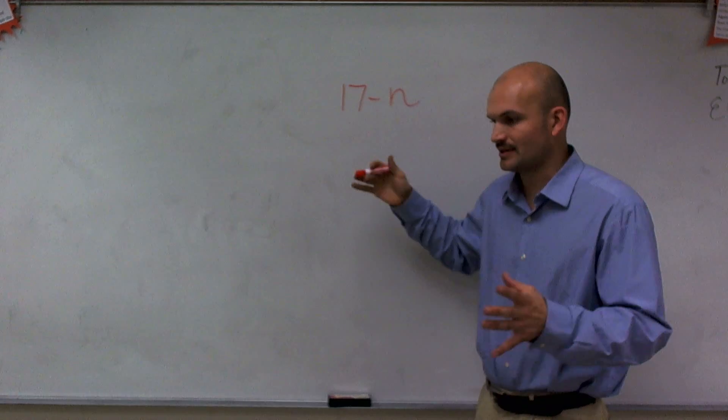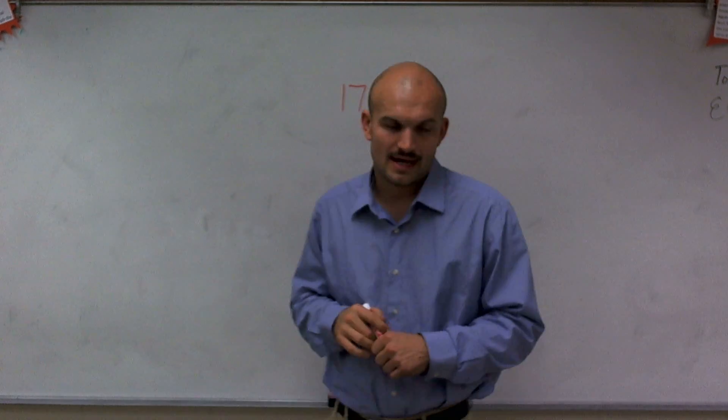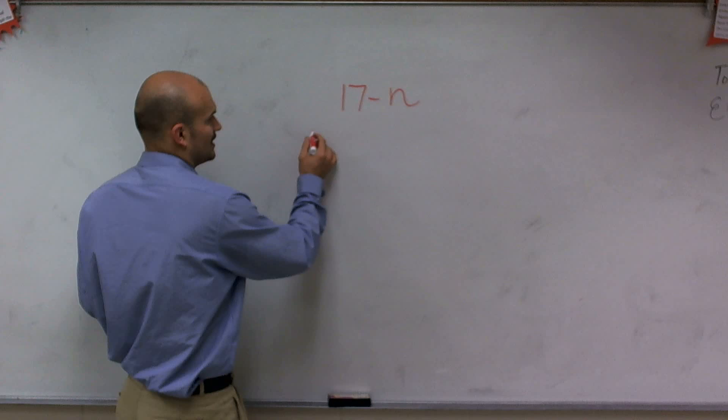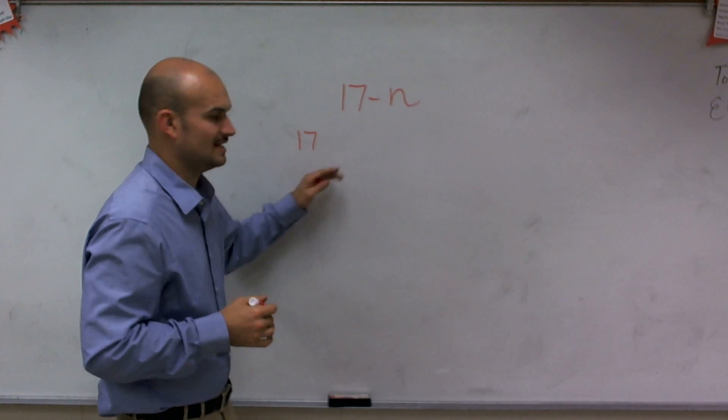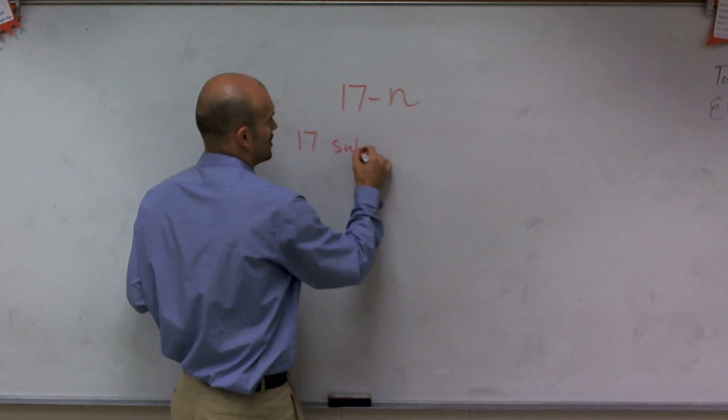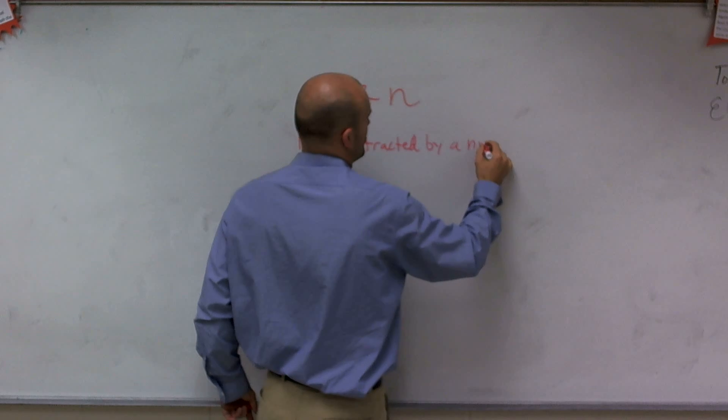And what I want to do is think about that. So 17 subtract a number, there's a lot of different ways you can write this. One way we could start it is you always want to take 17. So you're saying 17 subtracted by a number.